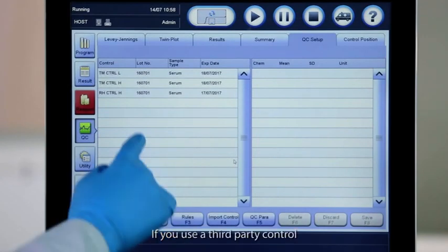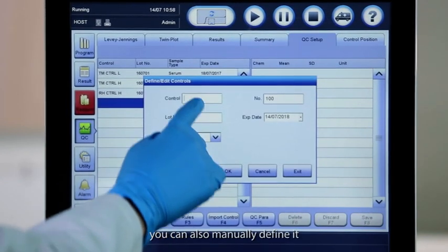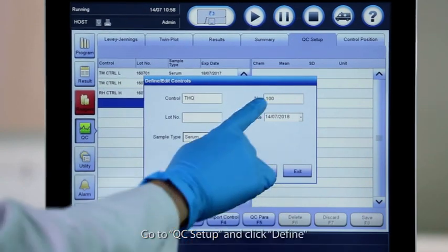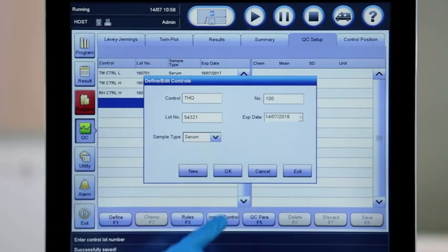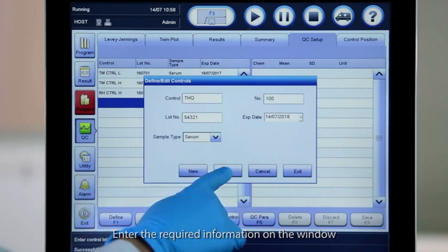If you use a third-party control, you can also manually define it. Go to QC Setup and click Define. Enter the required information on the window.